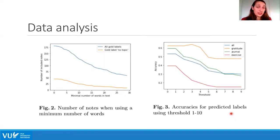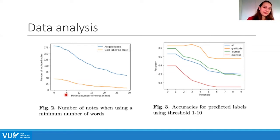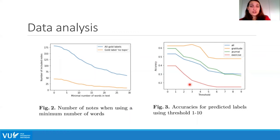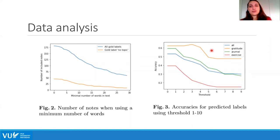We also explored adding a minimum word-count threshold for the pre-processed text to handle 'no topic' cases. However, applying this threshold caused us to lose more texts with actual topics than 'no topic' texts. We therefore decided to use all texts to avoid losing any data. Similarly, for the similarity score threshold, accuracy only improved for 'gratitude' above a score of one but decreased for other topics, so we kept the threshold at one — meaning we predict a label if the similarity score is at least one.